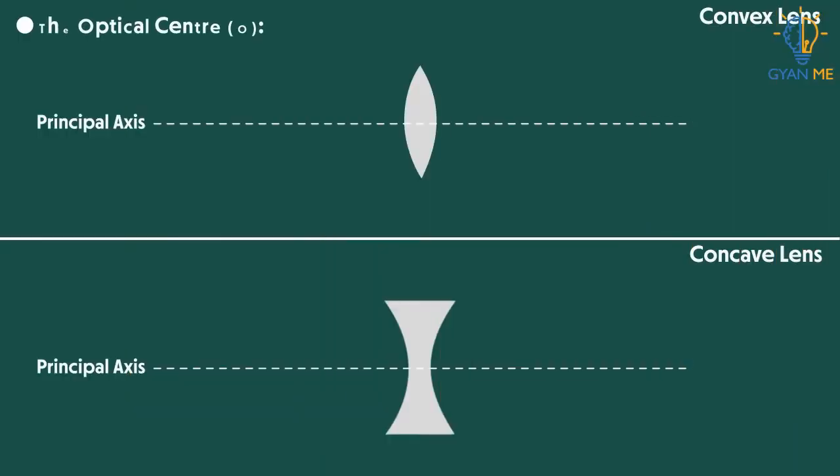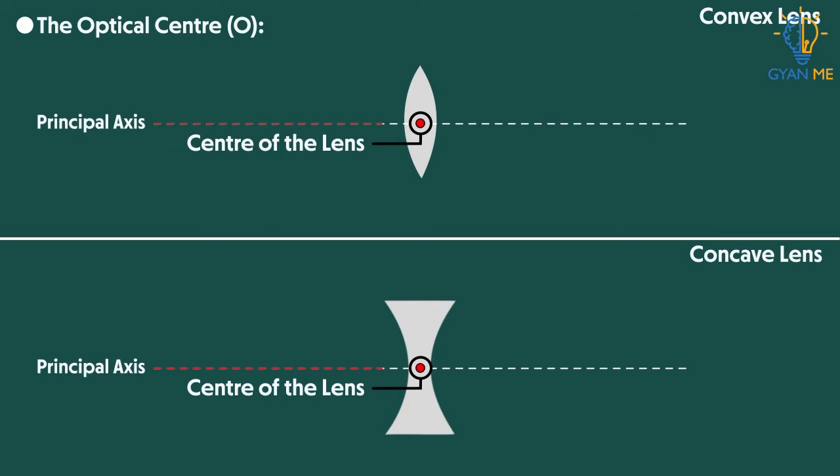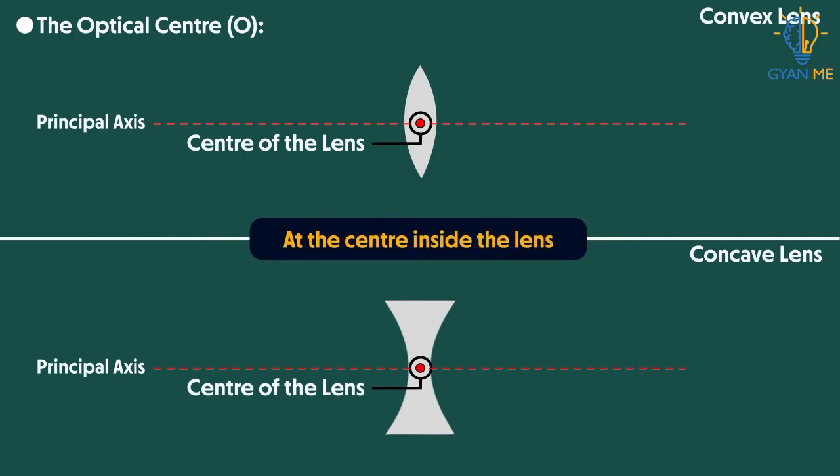The next term is optical center O. It is the point at the center of the lens, or it is the point on principal axis that is located at the center inside the lens. Remember, the pole is on the surface of the lens while optical center is inside the lens, exactly in its center.